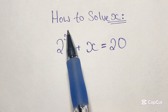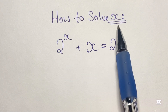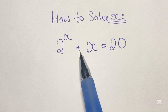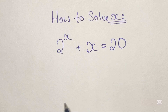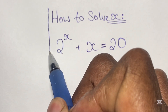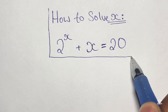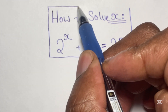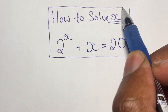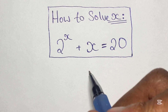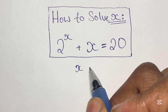Greetings again everyone, welcome back to my channel. Here we have another algebraic exponential equation that we're going to solve. In this equation we have 2 to the power of x plus x is equal to 20, and we are to find the value of x. Now just by looking at this equation, I know that you have probably guessed that x is equal to 4. But how do we actually show all working that x is indeed equal to 4?